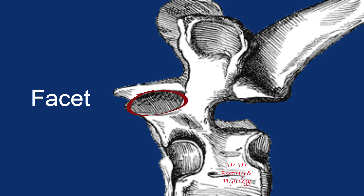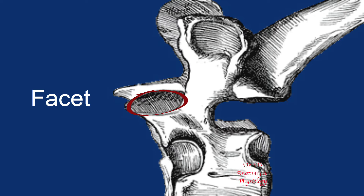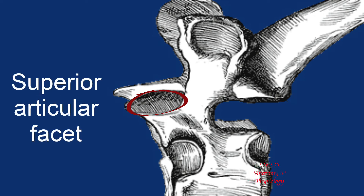Wherever we find a movable articulation, we are going to see smooth surfaces. Here on these vertebrae, because they tend to be somewhat small and confined to a relatively small area, they are referred to as facets. This particular facet, because it's on the superior articular process, would be called the superior articular facet.